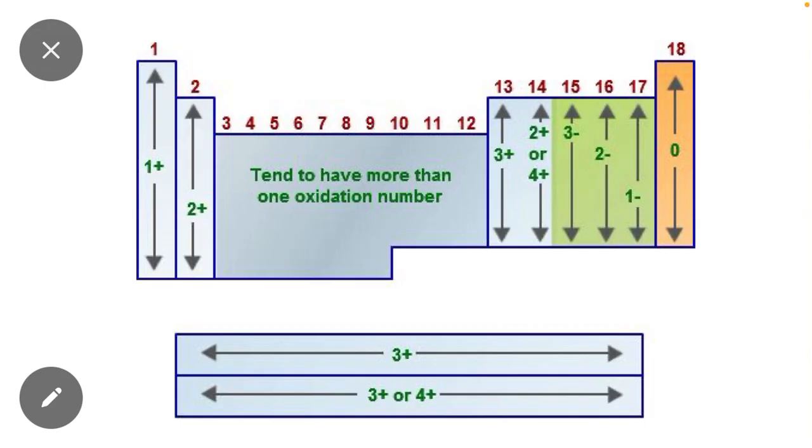Keep in mind, the elements of the first group - all elements of group 1A show plus one oxidation. For example, hydrogen comes in group one, shows plus one oxidation state. Sodium comes in group one, shows plus one oxidation state. Lithium, sodium, tritium, rubidium, all show plus one oxidation state.